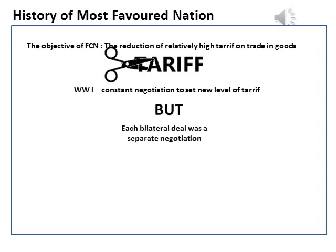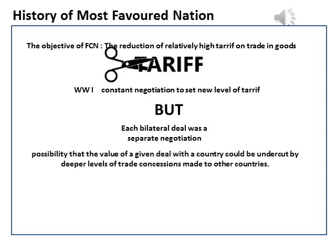Each bilateral deal was a separate negotiation and, accordingly, there was always the possibility that the value of a given deal with a country could be undercut by deeper levels of trade. In this context, it is not difficult to see why countries would refuse to enter into such bilateral deals unless the commercial value of their tariff reductions was protected by an unconditional MFN obligation guaranteeing that any subsequent concessions on these products would also be accorded to them without further payment.